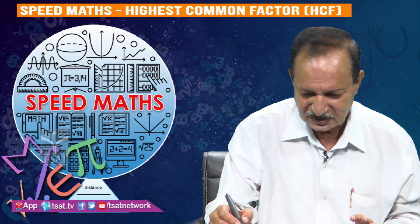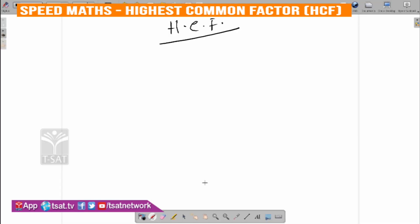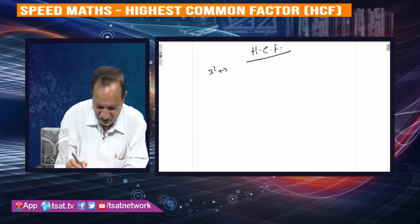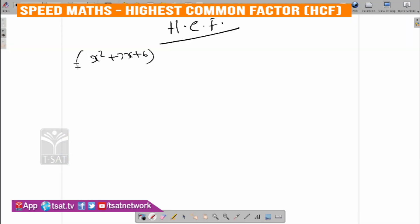Highest common factor. Suppose x squared plus 7x plus 6 and x squared minus 5x minus 6. We need to find the HCF of x squared plus 7x plus 6 and x squared minus 5x minus 6. This is HCF.